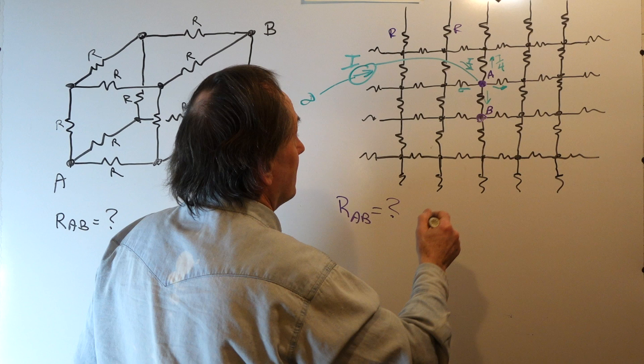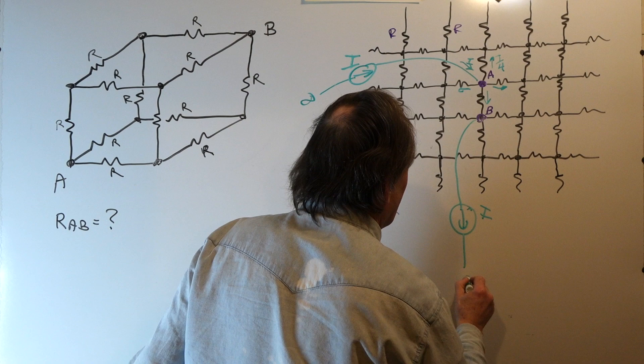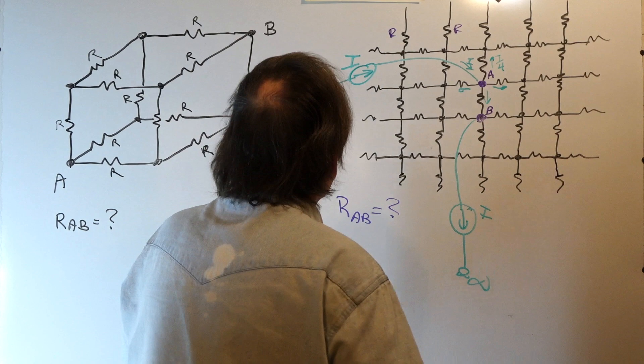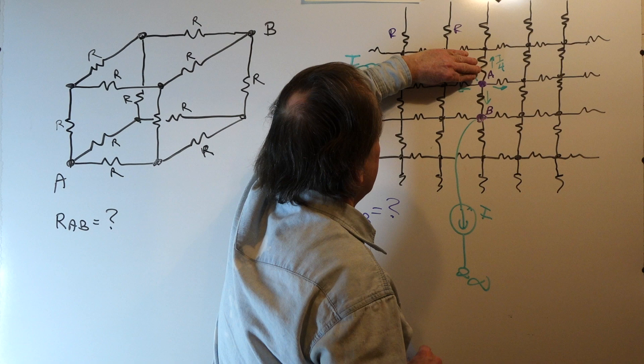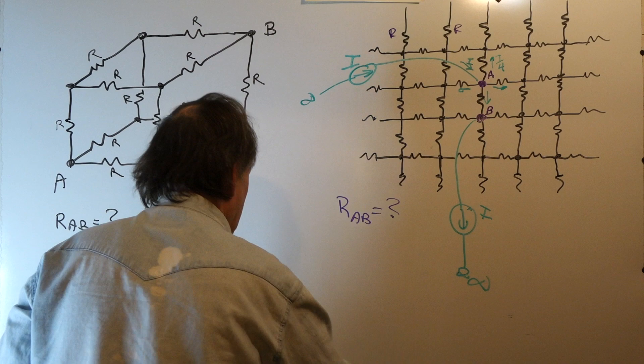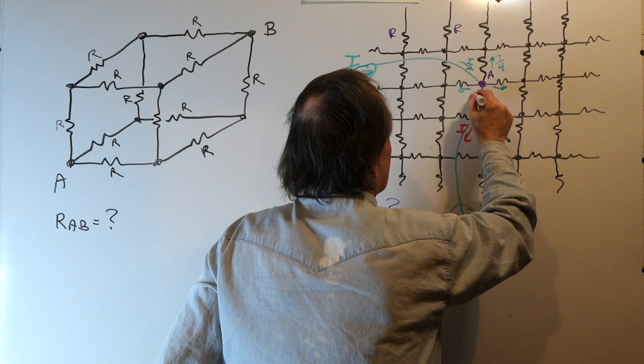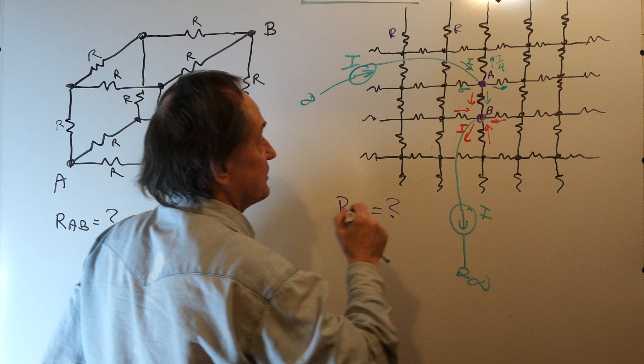Now, let's take another current source and connect it to node B, but in the reverse direction. So it's pulling current I out of the node and sourcing it into infinity. Now using superposition, we're going to turn this current source off, and we'll turn this current source on. Again, the current I coming out of node B has to be coming from each of the four adjacent resistors with a value I over four to combine to give us current I.